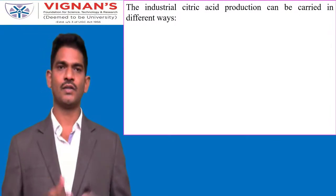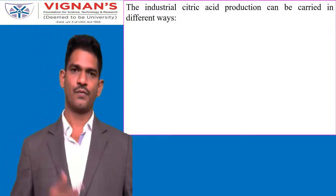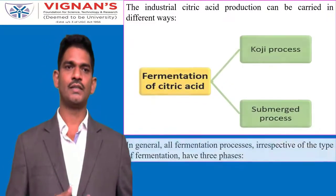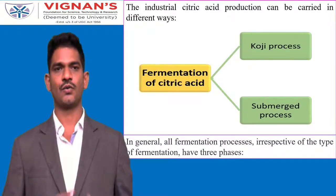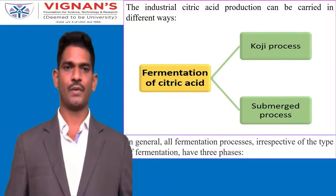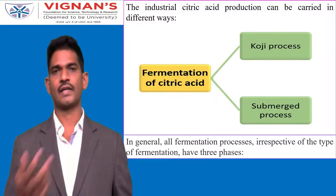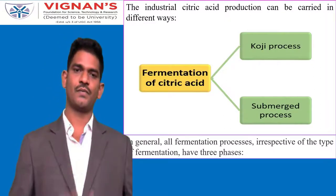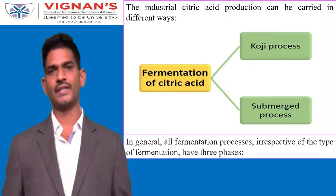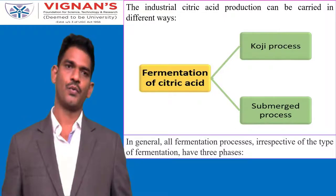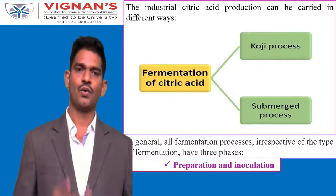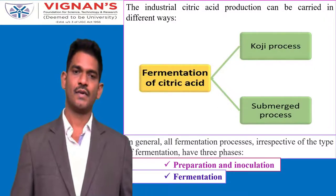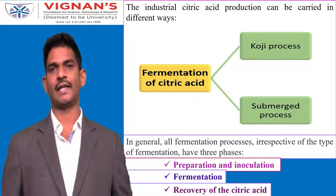Industrially, two modes of fermentation are used for producing citric acid. One is the Kogee fermentation process, which is a solid state fermentation process. The second is the submerged fermentation process. Irrespective of the fermentation process, there are three common phases: preparation and inoculation, fermentation, and recovery of citric acid.